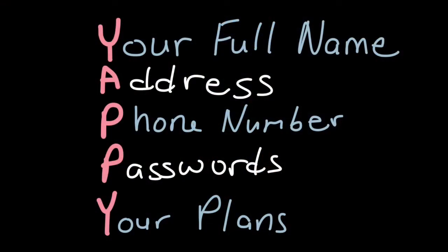We learned about the acronym YAPI. We learned that YAPI stands for the five things that we do not want to put out on the internet. We also learned to make sure that adults know when we go on the internet, and if something strange pops up on our screen, to show that to our adult.